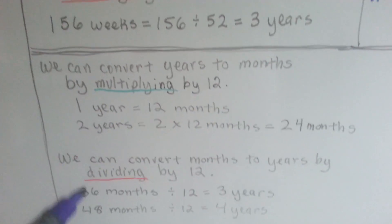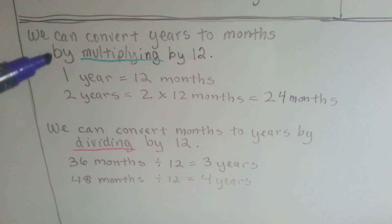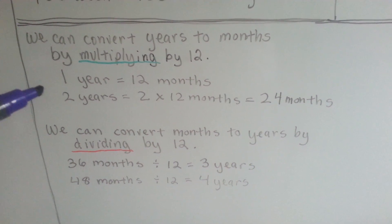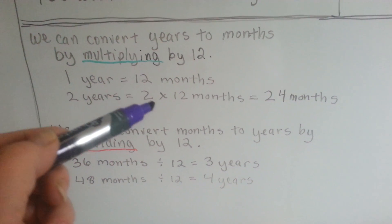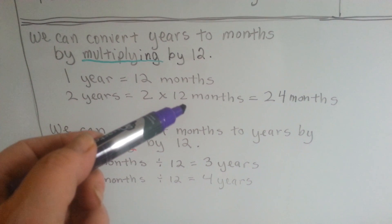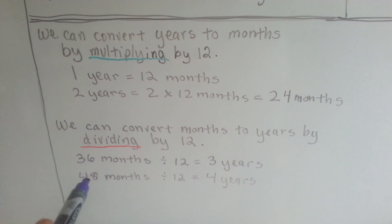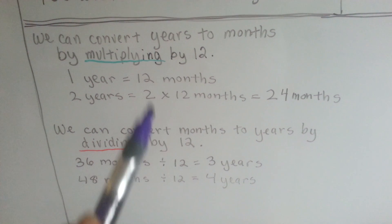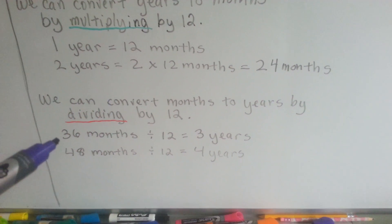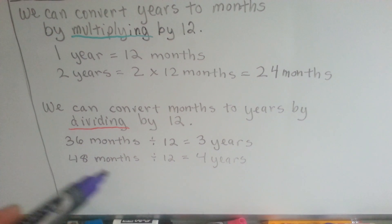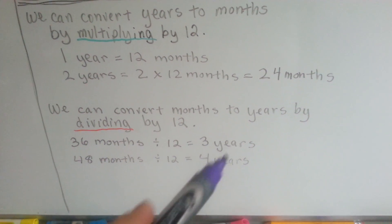We can also convert years to months, because there are 12 months in a year — all we have to do is multiply by 12. One year is 12 months, so 2 years would be 2 times 12 months, which is 24 months. We can also flip it around and do months to years by dividing by 12. So if something is 36 months long, we divide by 12 months in a year, and we know that it's 3 years.